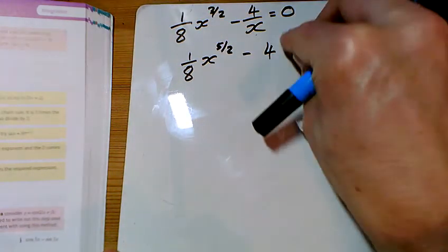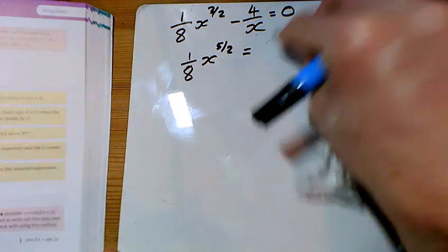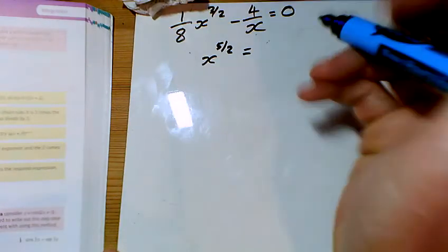Now, if we add the 4 to both sides, we can make this equal 4. If we times both sides by 8, we can now make this equal 32.